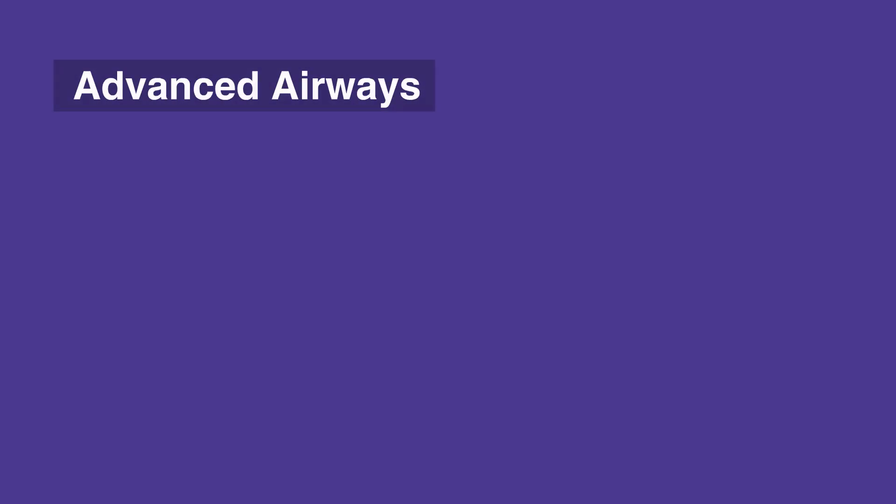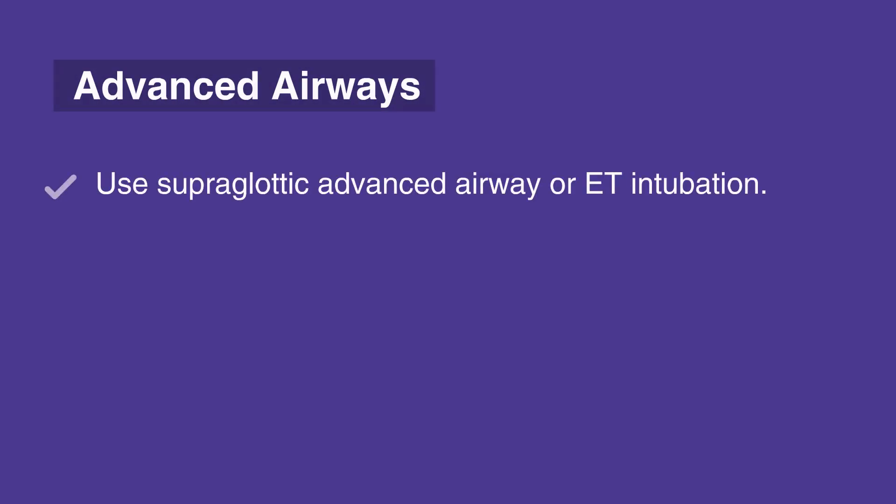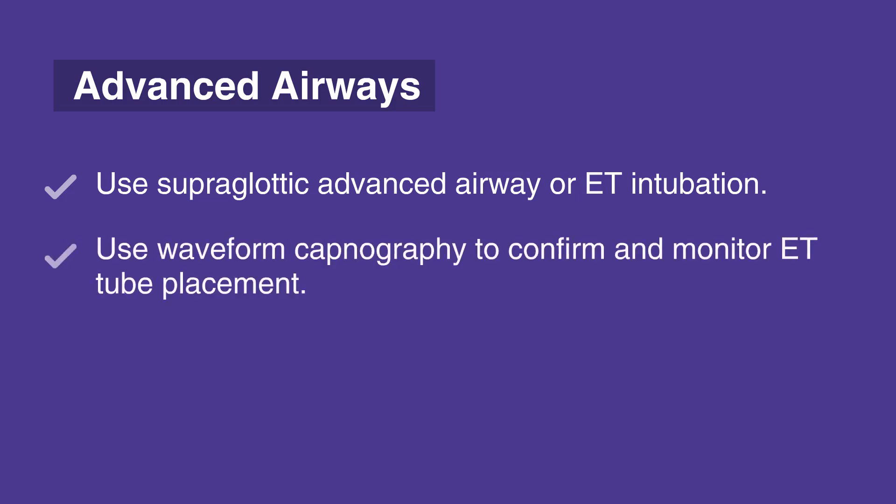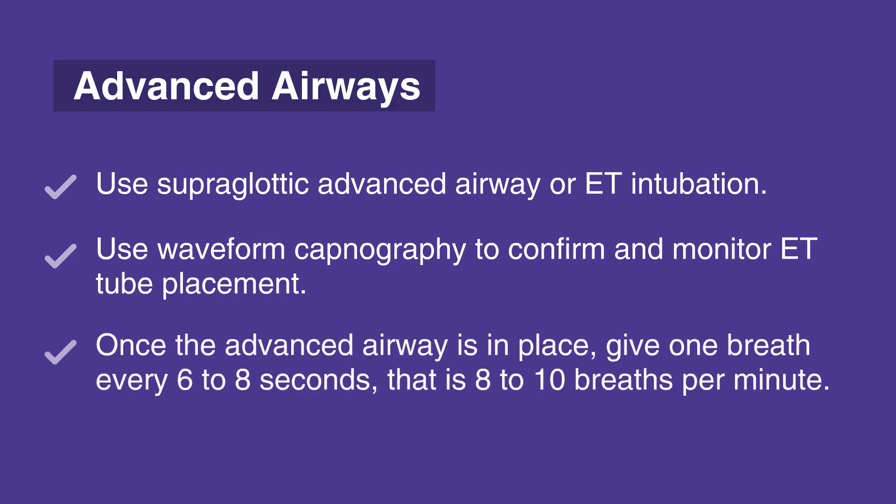When working with advanced airways, use a supraglottic advanced airway or ET intubation. Use waveform capnography to confirm and monitor ET tube placement. Once the advanced airway is in place, give 1 breath every 6 to 8 seconds, that is 8 to 10 breaths per minute.